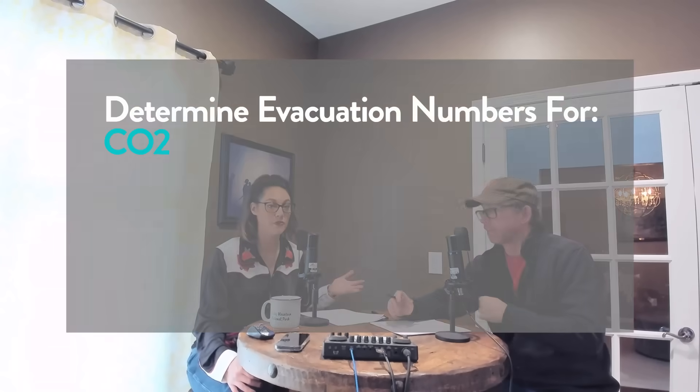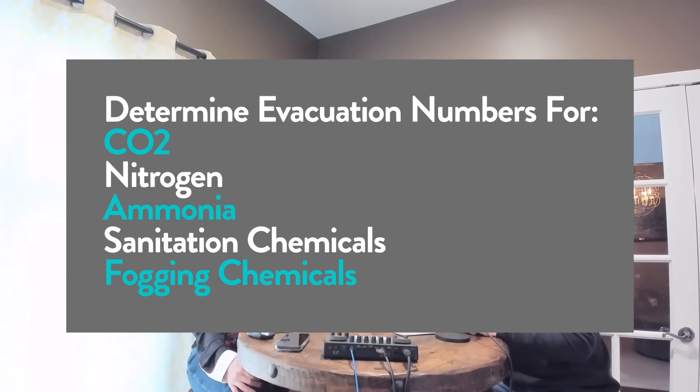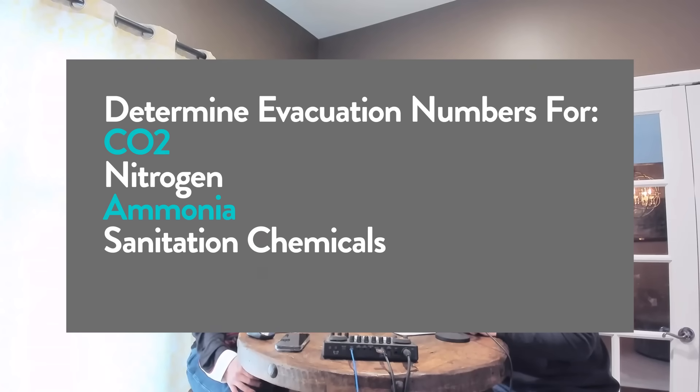Your EAP should already address what chemicals you have, how you're going to manage those, and when to evacuate. From a food plant perspective, you should have this covered for CO2, nitrogen, sanitation chemicals, and ammonia — those are the top ones. So once you have a chemical situation and you're going to evacuate, you've got to define what happens next.